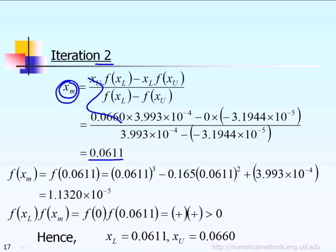Again, once you calculate that, the next thing we say is, what is the function at X of M? Well, we know X of M is equal to 0.0611. So the function at X of M is, you just go back to the cubic equation. Whenever you see X, you replace by the new X of M, which is 0.0611. So FXM, it will turn out to be a positive value.